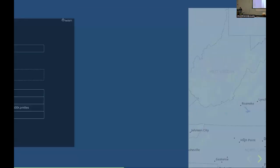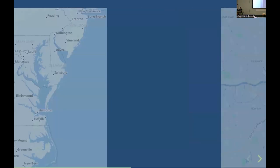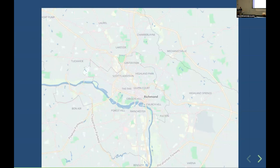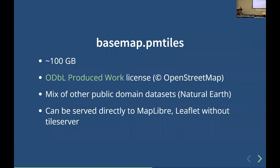Here's a view of styling applied to that x-ray view, zooming in on Virginia. It has some decisions baked in as to which features exist at which zoom levels, doing some generalization and some choice of place names from OpenStreetMap. It uses an accompanying file format called PMTiles — it's about 100 gigs. The license of the output is an ODBL produced work, so it is a transformation of the ODBL database into a visual product. It also mixes in some other public domain datasets such as Natural Earth. It can be used directly with a front-end library such as MapLibre or Leaflet without having to run a tile server in between, making it accessible to anyone from a hobbyist to a company.